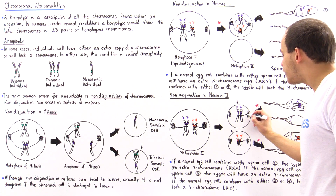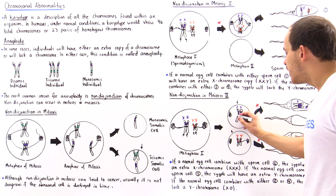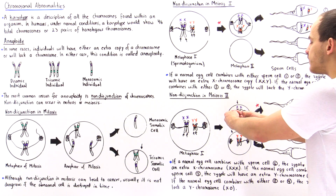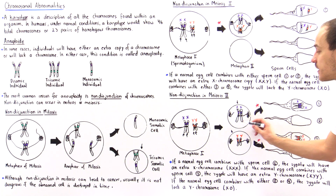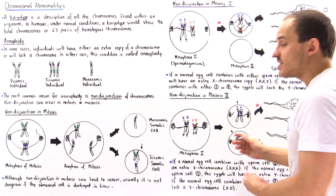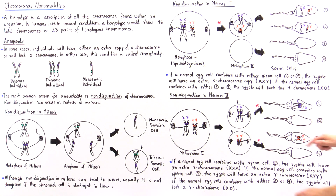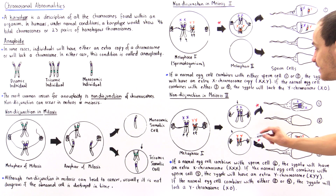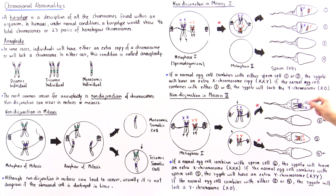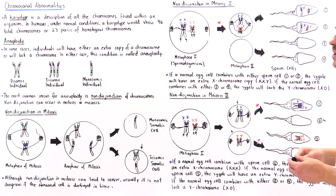What happens is one fiber forms a connection and the other one doesn't — the same in the second cell. When segregation takes place, the entire pair of sister chromatids moves to one cell, forming sperm cell one, while the other cell gets nothing, forming sperm cell two. The same happens in the second pair: sperm cell three gets the entire pair of identical Y chromatids, and sperm cell four gets nothing.